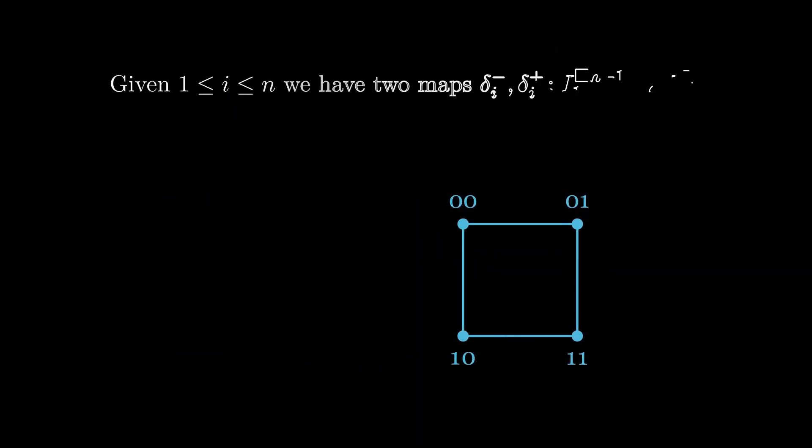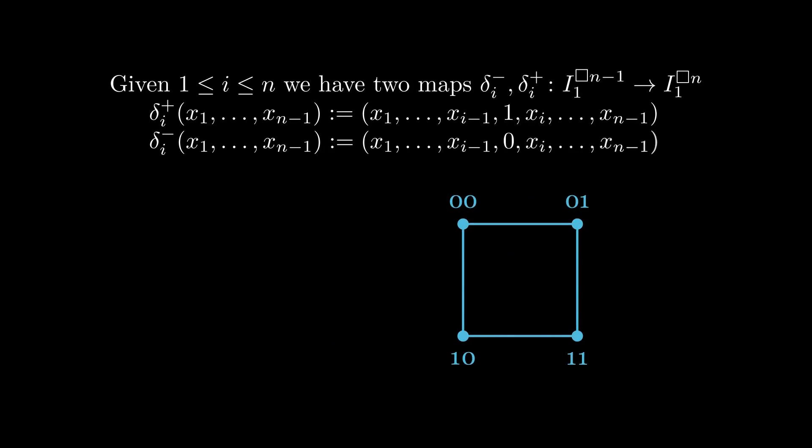Given i between 1 and n, we can define two maps, delta i-minus and delta i-plus, from the n-minus 1 cube into the n-cube. Delta i-plus is given by taking a vertex x1 through xn-1 and inserting 1 in the i-th coordinate. And delta i-minus is defined the same way, but inserts 0 in the i-th coordinate.